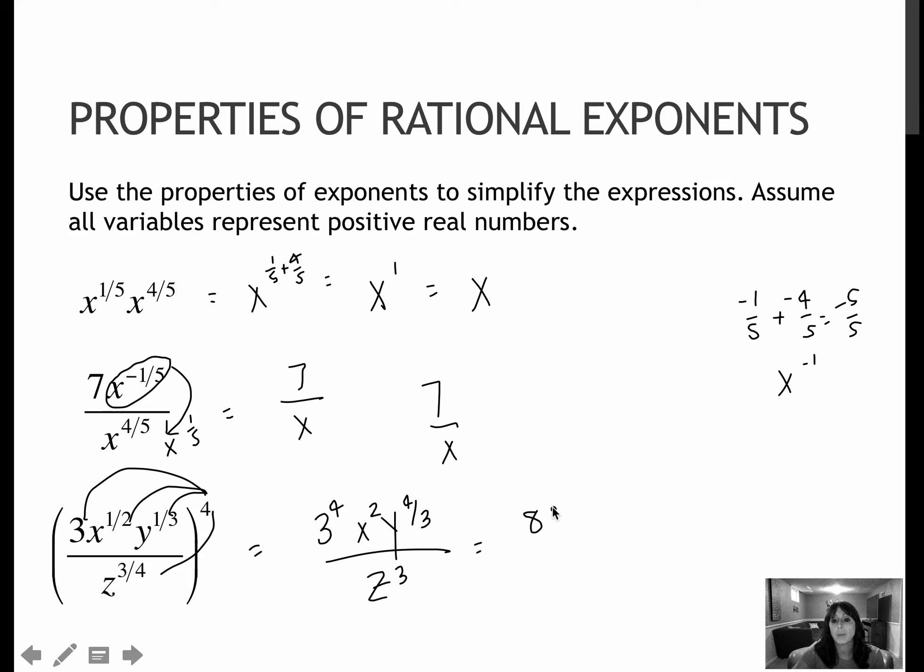Three to the fourth I would turn into 81. The rest of this, I would leave just as it is. There's really no purpose in me writing the third root of y to the fourth and so on. It's just going to make it more complicated, so I would leave it just like this.